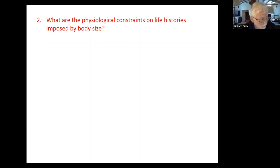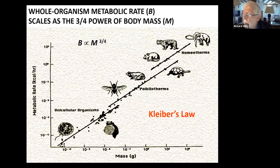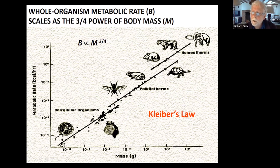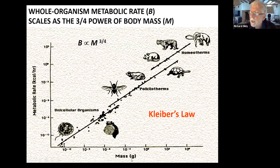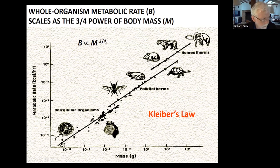Why is it that larger animals can't breed as early as small animals, for example? The way I'm going to start talking about this is in terms of Kleiber's Law, which I guess nowadays everyone will be familiar with. This is an early representation — you look at the metabolic rate, the power available to the organism to grow and to reproduce, and that scales with adult body mass. You get that metabolic rate depends on mass to the three-quarter power. There's been immense debate about whether it's really three-quarters or not.